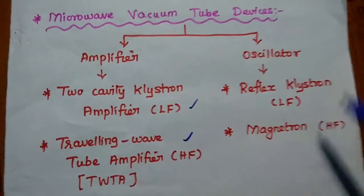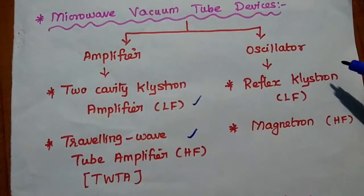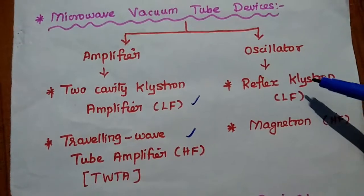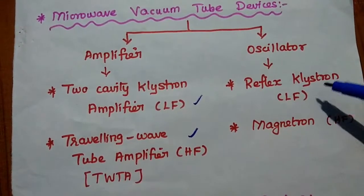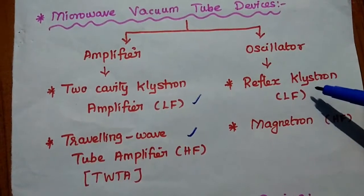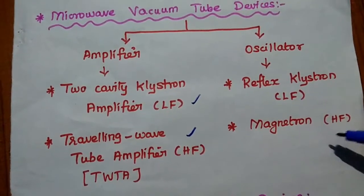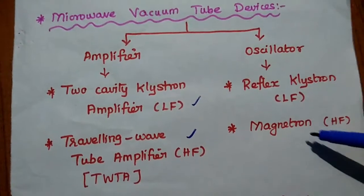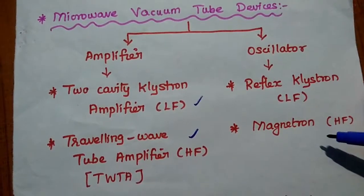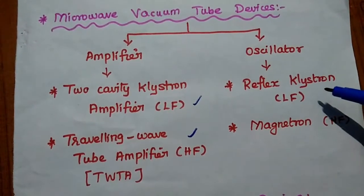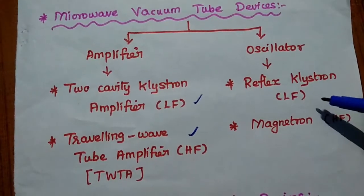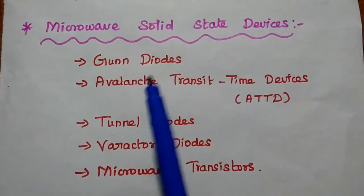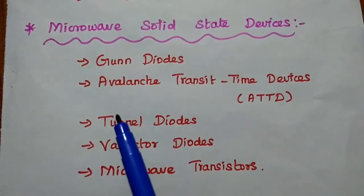The TWT amplifier is especially used in satellite communication. Microwave oscillators have different types; the best examples are the reflex klystron, which generates a low-frequency microwave signal, and the magnetron, which is widely used in microwave ovens. The reflex klystron is specially designed for laboratory experimental purposes.